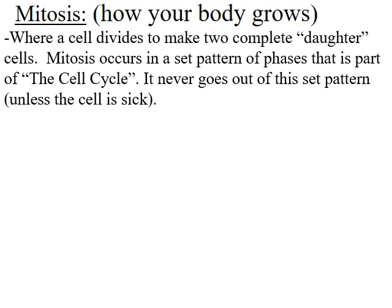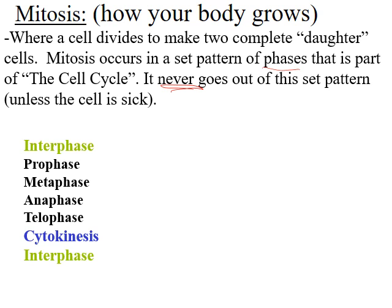Mitosis actually occurs in a very specific pattern of phases. This is part of what's known as the cell cycle, and it never goes out of this pattern unless something is wrong with the cell. If something is wrong with the cell, you can have issues where the cell doesn't divide properly and maybe the cell doesn't survive. For healthy cells, the pattern is always the same. This shows the basic stages for the cell cycle — not just mitosis, but the whole cell cycle in order.